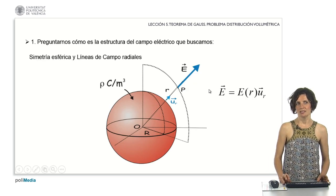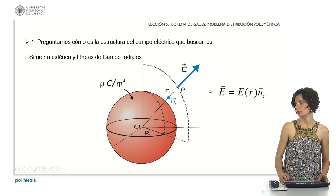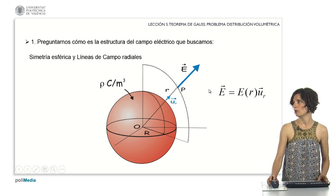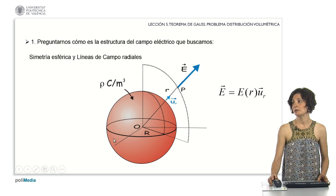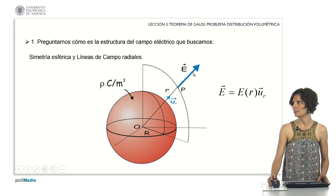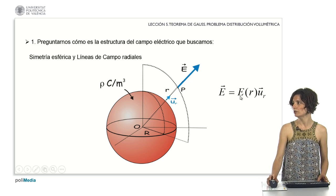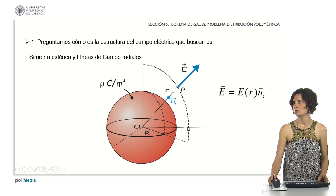In this case, how is the structure of the electric field we are looking for? The distribution has spherical symmetry, and the field lines are therefore radial. The modulus of the electric field will depend on the distance r (lowercase) from the center of the distribution.